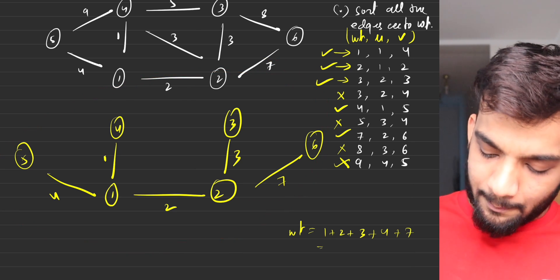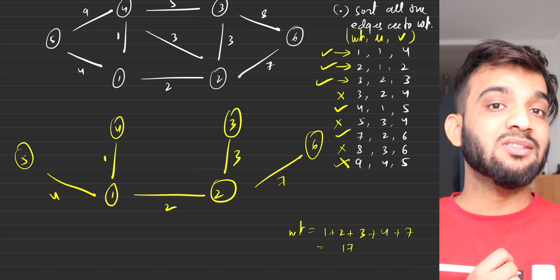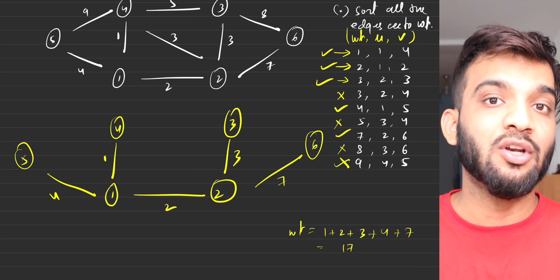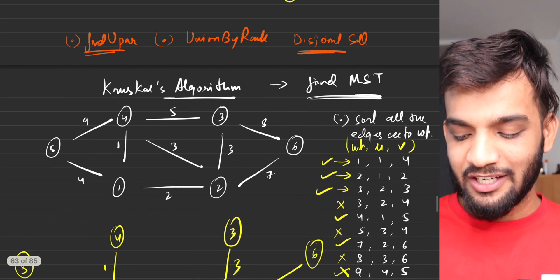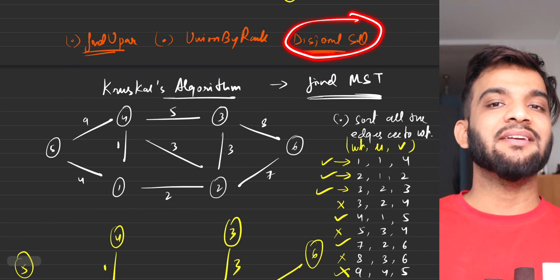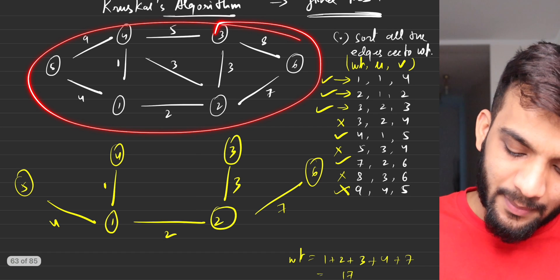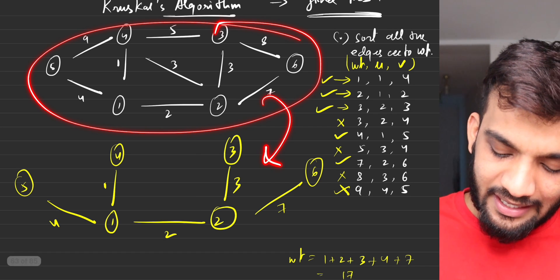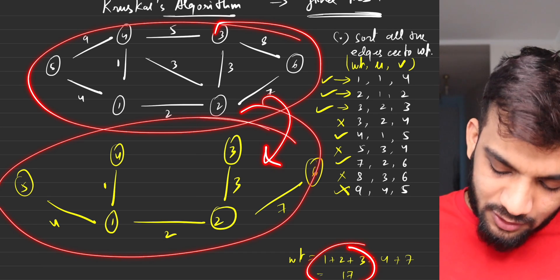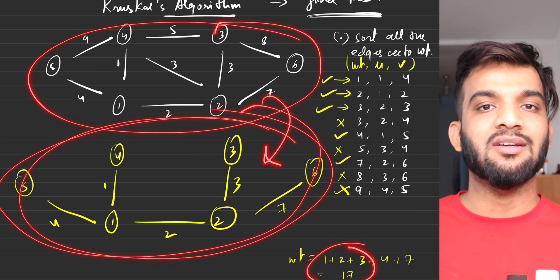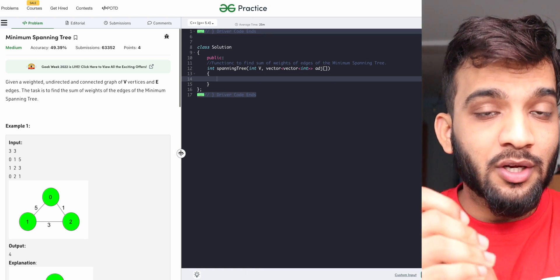So this is our MST and the summation of weights will be one plus two plus three plus three plus six plus something — the total is 17. It's very simple: you just need to know the disjoint set data structure and you can easily find the MST from any given graph, including the weight as well as the actual MST.